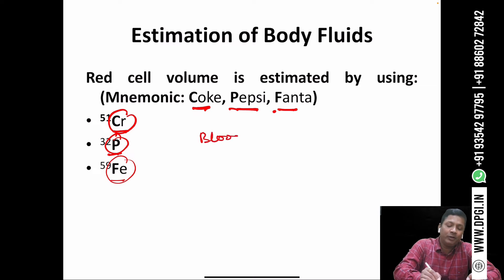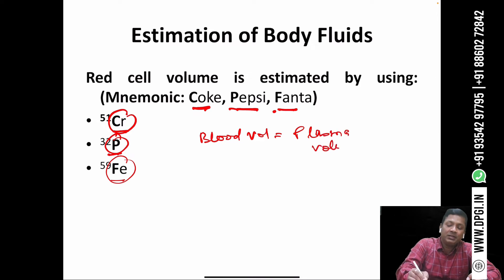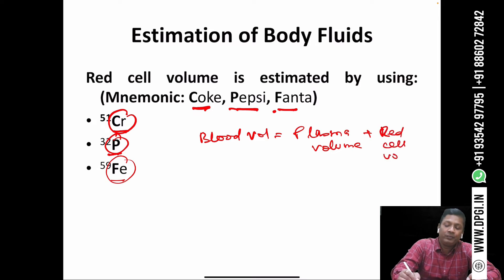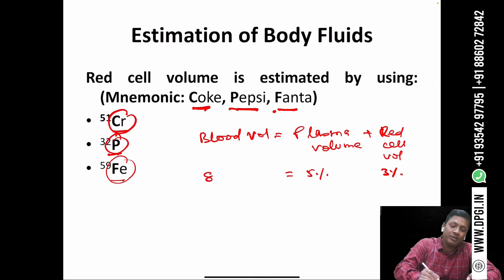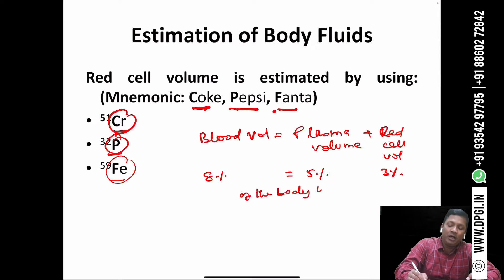Blood volume equals plasma volume plus red cell volume. The plasma volume is 5% of body weight and the red cell volume is 3% of body weight, so total blood volume equals 8% of body weight. All these percentages are in terms of body weight.